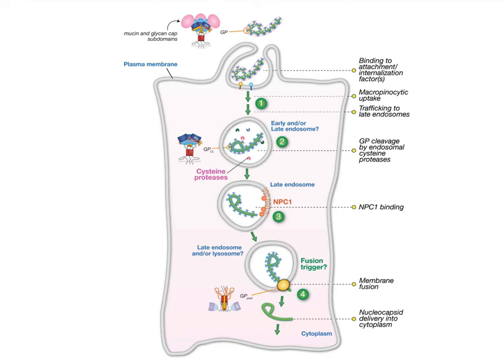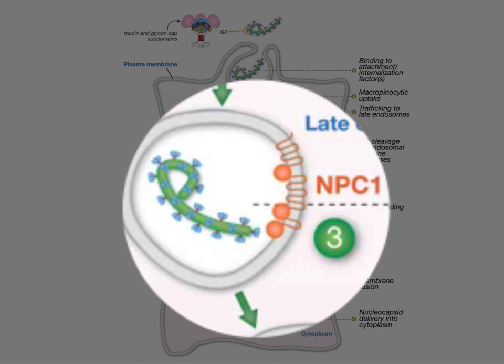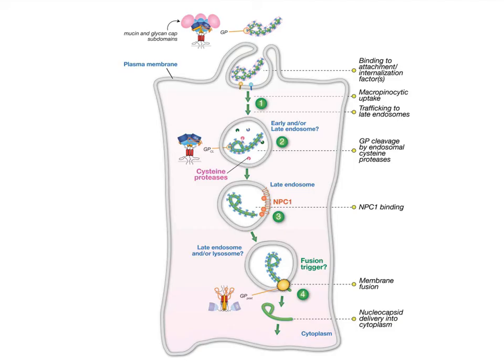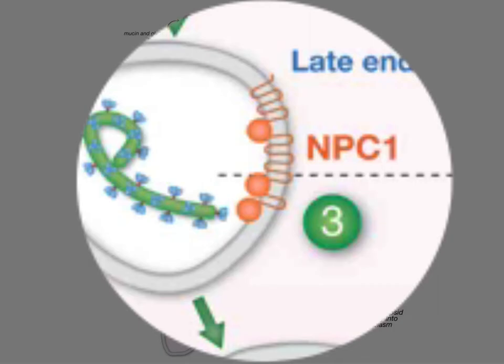Once that cleavage occurs, the next thing that happens is the virus binds to an endosomal protein called NPC1 — Niemann-Pick protein 1 — because people with Niemann-Pick disease have a defect in this protein and they have a problem transporting cholesterol. They tend to accumulate it in deposits in the cell, leading to neurological problems. Niemann-Pick fibroblasts are deficient in this receptor and cannot be infected by Ebola virus. So the virus apparently binds to NPC1 in the endosome — we haven't seen this before. We've talked about binding at the plasma membrane, but this is the first time we have two sets of binding: first at the plasma membrane, and then a second interaction in the endosome.